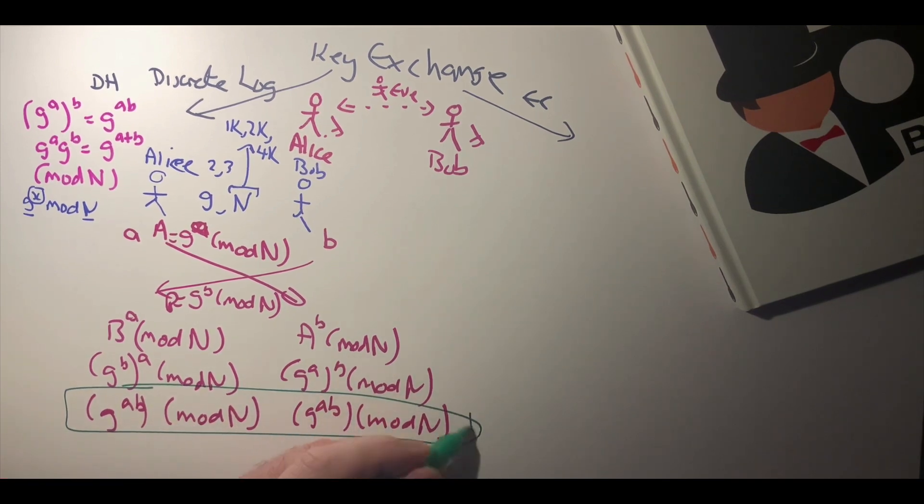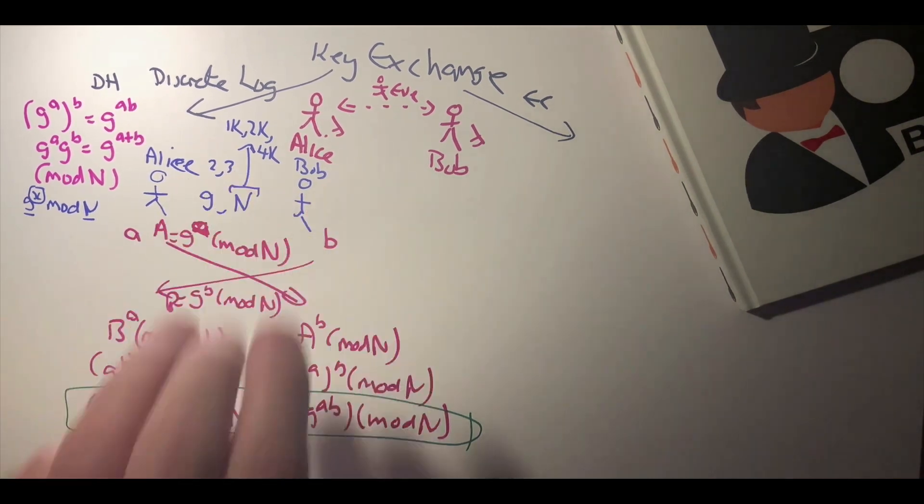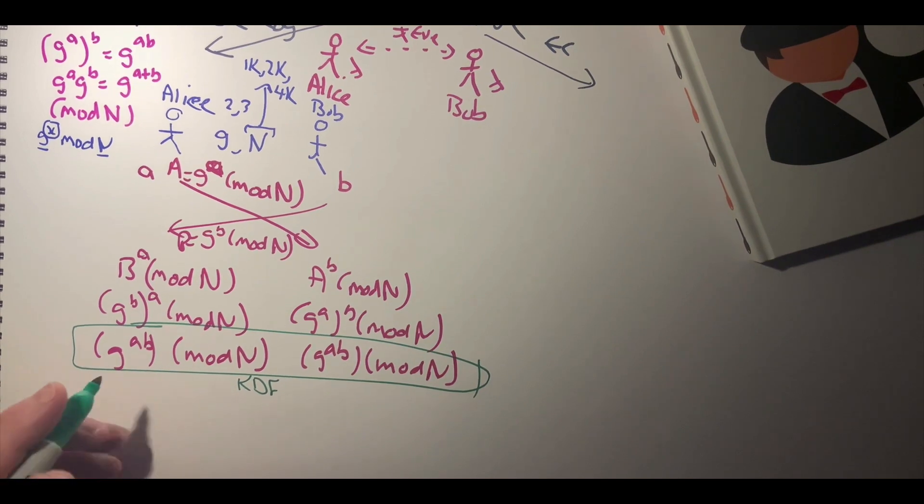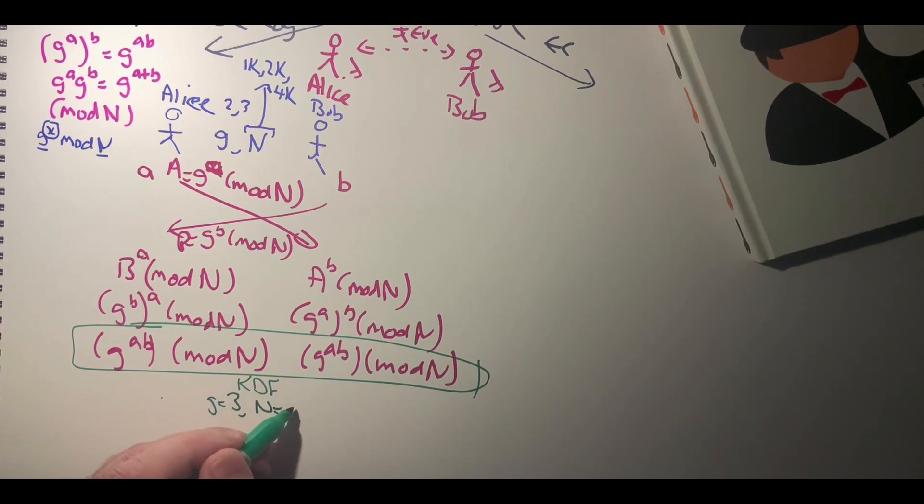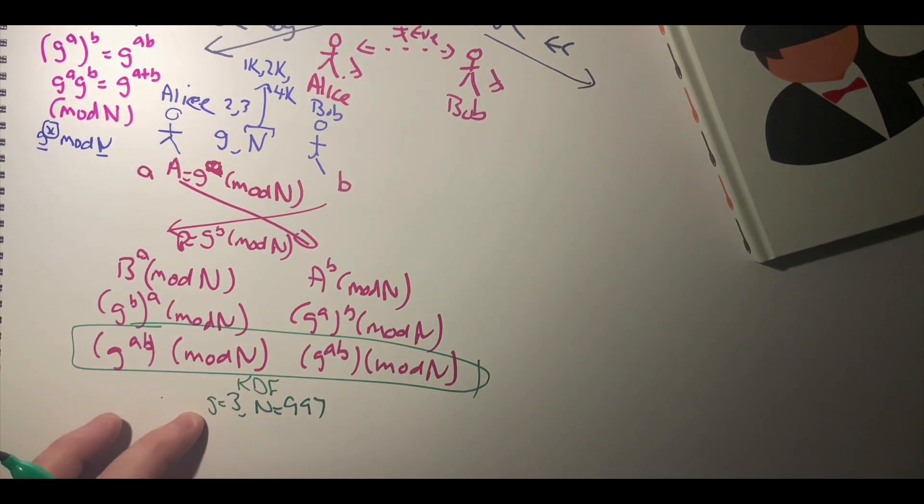We typically then use a key derivation function to take this value and create an encryption key which can then be used for the session between Bob and Alice. If we take an example, let's say that g is equal to 3 and n is equal to 997. It'll obviously be much greater than this but we'll keep it fairly simple.